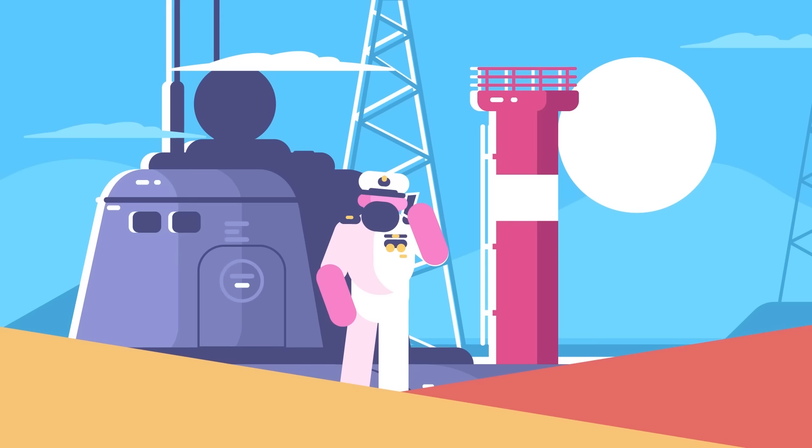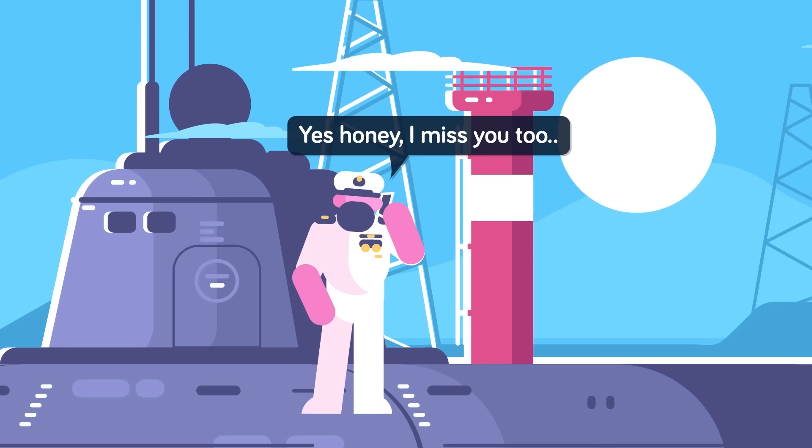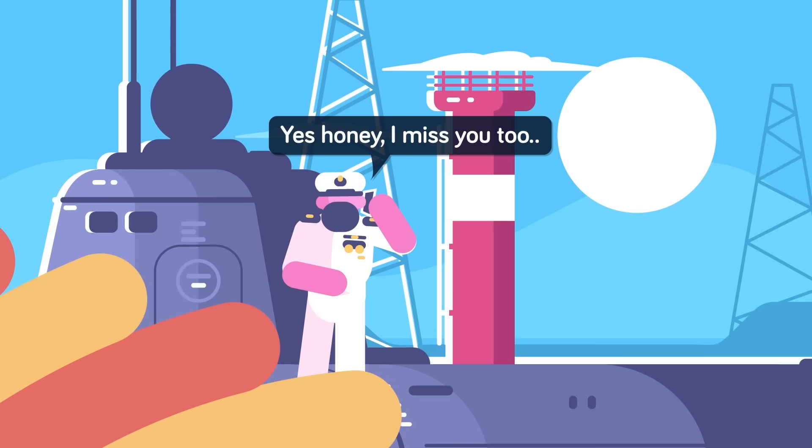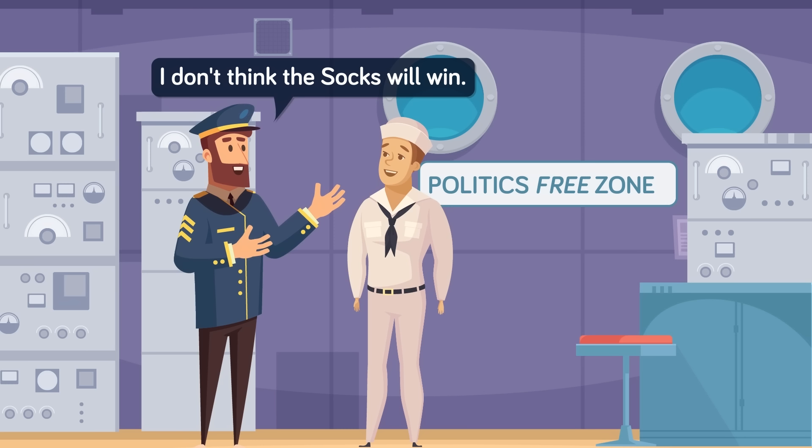There is no internet aboard a submarine, and communication with the outside world is reserved for the rare instances that a sub surfaces. Because initiating communications can give away a subsposition, and stealth is the most valuable asset, submariners don't communicate much with the outside world. That means that submariners can go weeks or months without contacting family or loved ones, and must rely on the friendships they've developed on board. To make the cramped environment more tolerable for each other, submariners have additional unwritten rules, such as no talk of politics on board, although sports trash talk is acceptable if not encouraged.